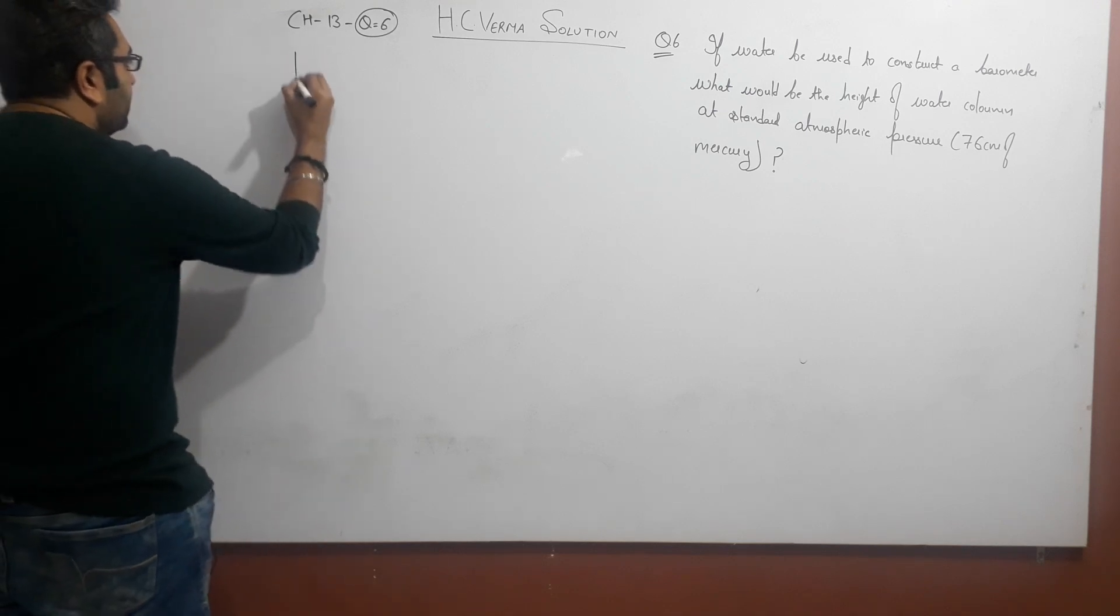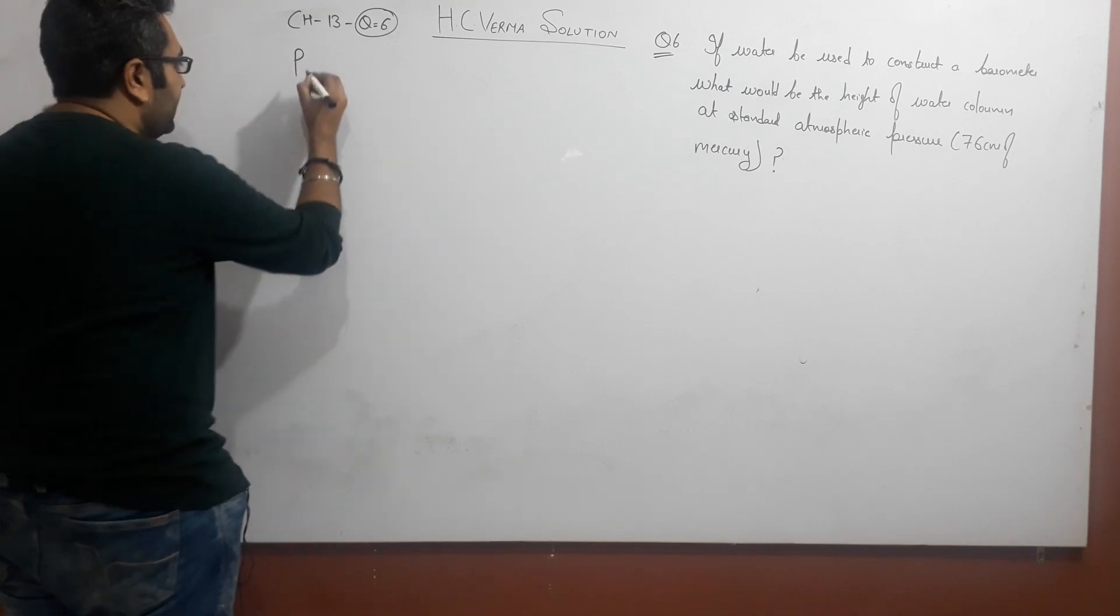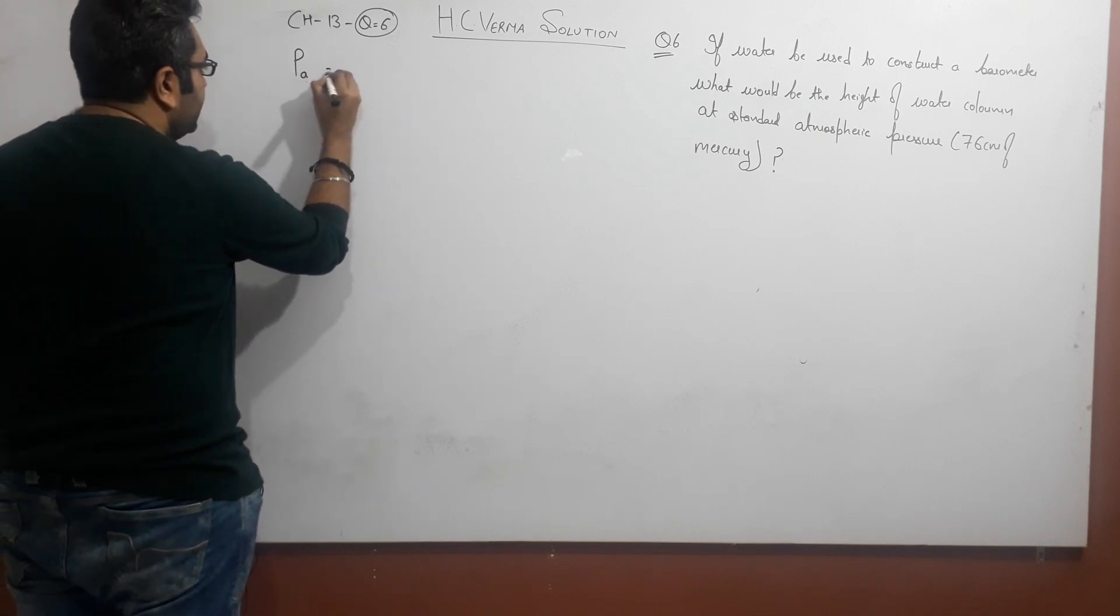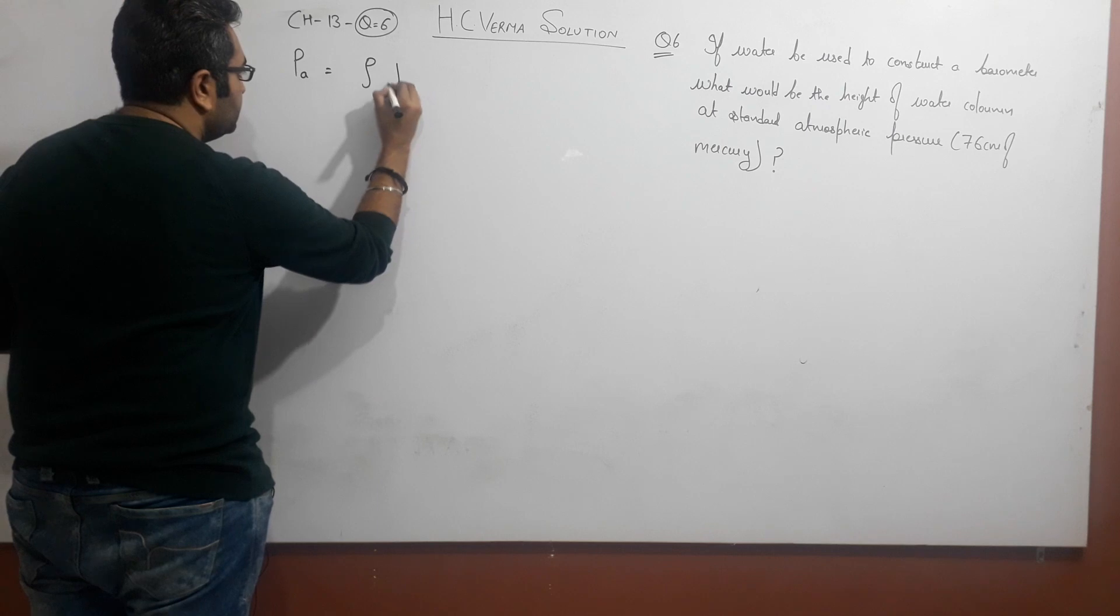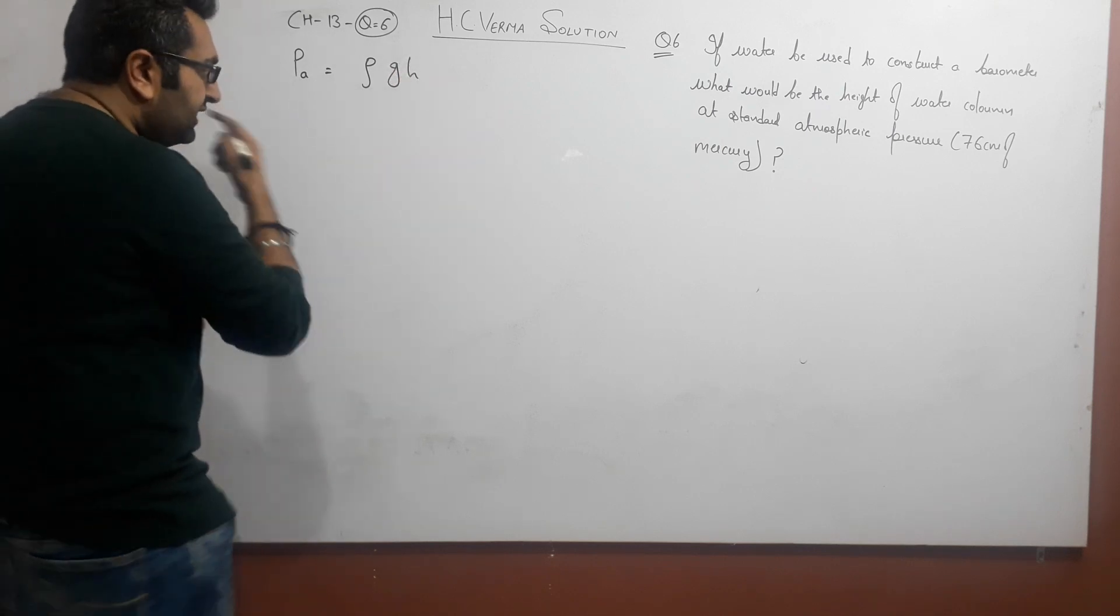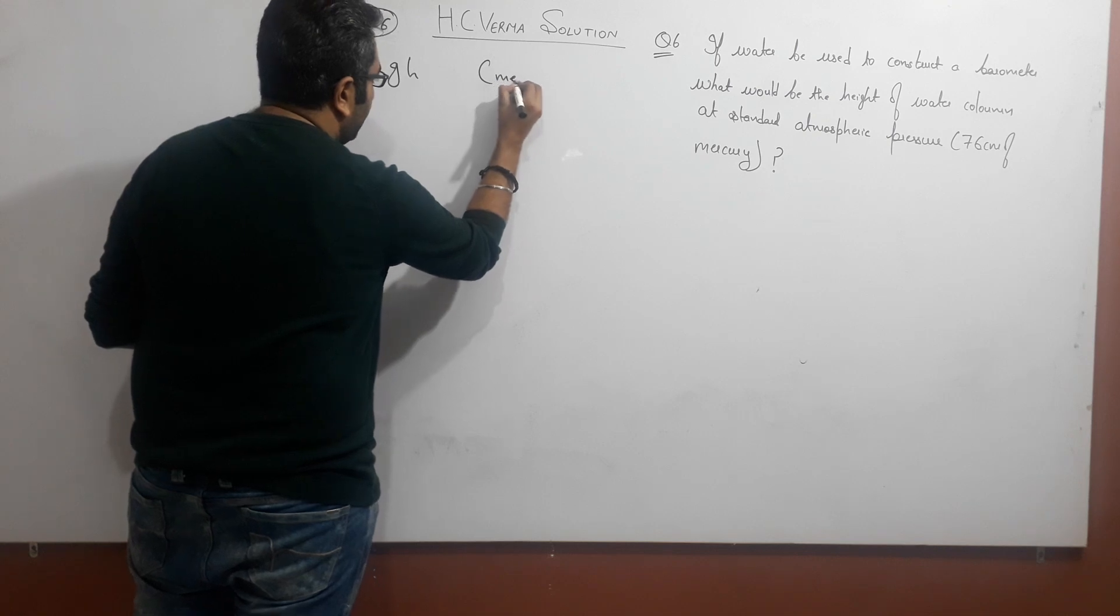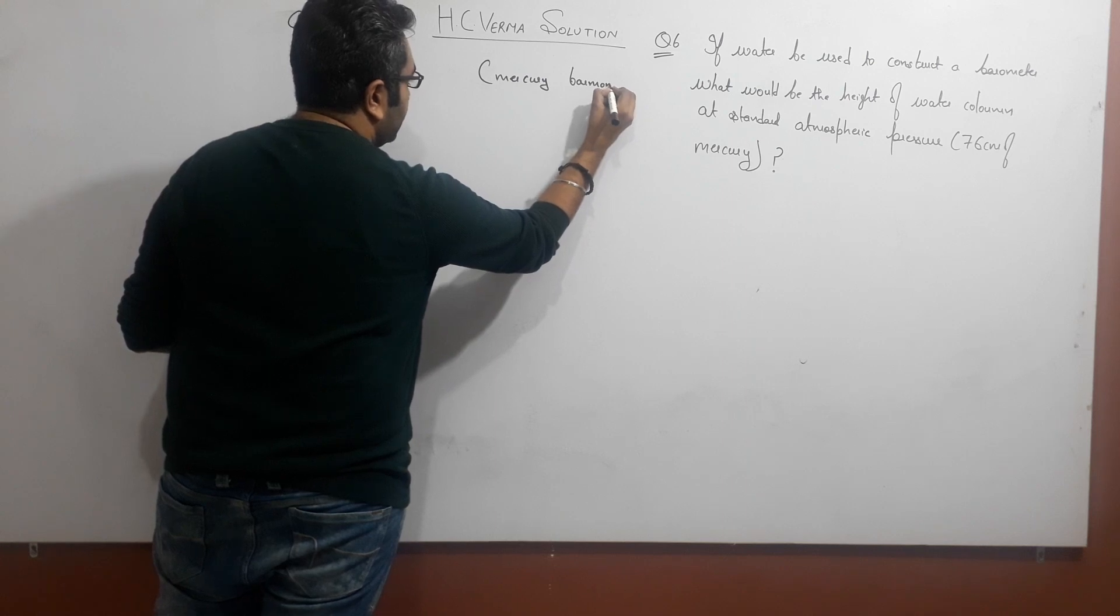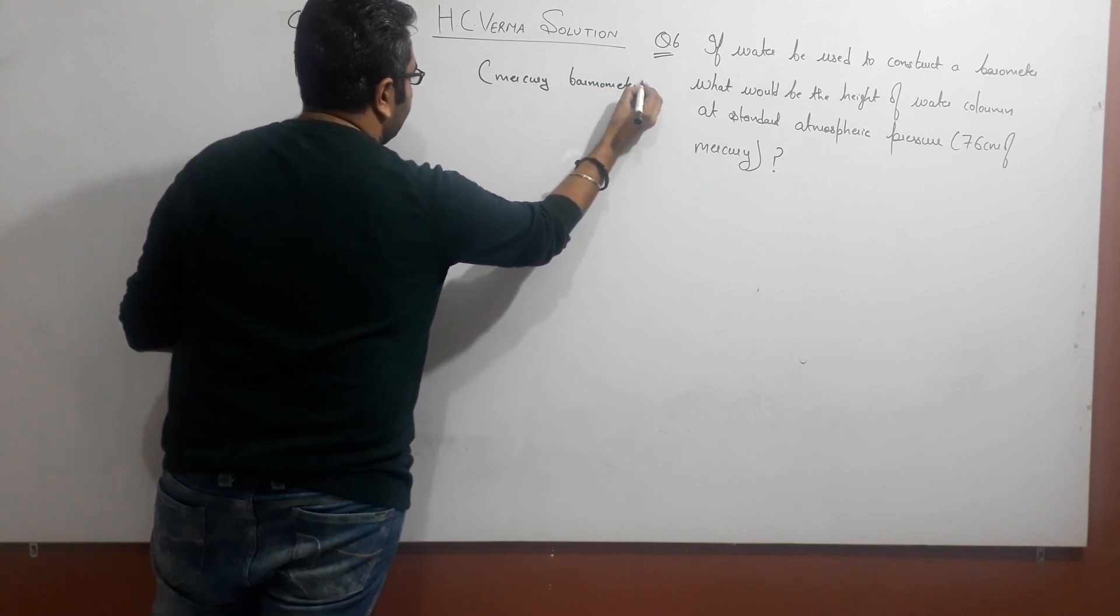Let's talk about the concept of pressure. We know the basic formula is ρgh. The pressure difference is ρgh. Atmospheric pressure is ρgh. If I talk about mercury barometer, that will be ρgh for mercury.